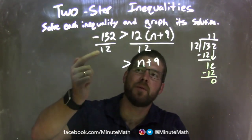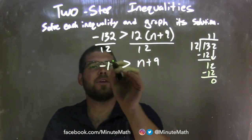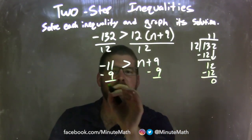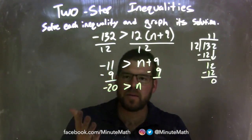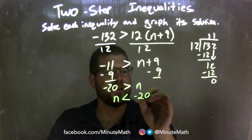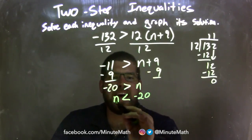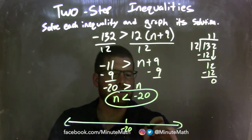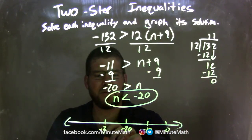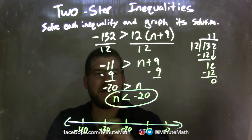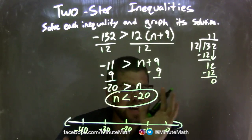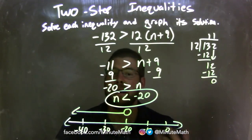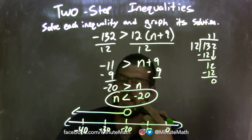Now I subtract 9 from both sides to get n by itself: negative 11 minus 9 is negative 20. So we have negative 20 is greater than n. Let's rewrite this to have n come first — n is less than negative 20. Be careful: we flip the inequality when we do that. So n is less than negative 20, and that is my final answer. Making my number line: negative 20 in the middle, going by 10s — negative 10, 0, negative 30, negative 40. n is less than negative 20, so open circle at negative 20, arrow to the left. Graph matches n is less than negative 20.